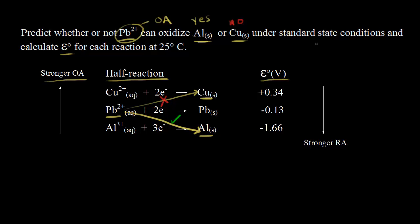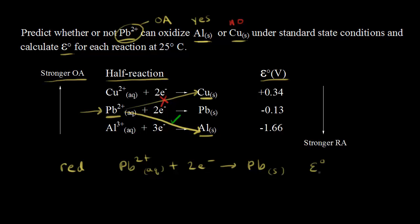Let's calculate the standard cell potentials for each reaction to confirm our predictions. Starting with Pb²⁺ oxidizing solid aluminum: since Pb²⁺ is being reduced, we write the reduction half-reaction as Pb²⁺ + 2e⁻ → Pb(s). The standard reduction potential for this half-reaction is −0.13 volts.